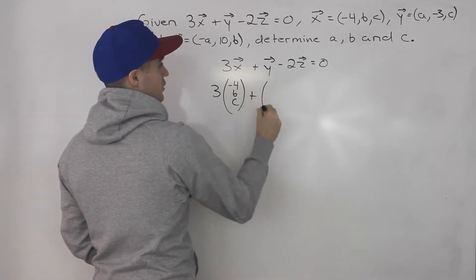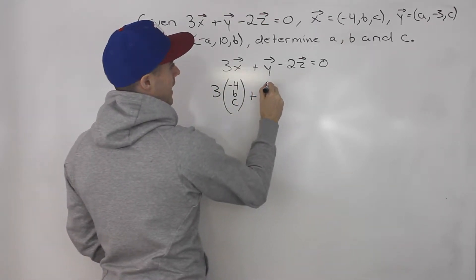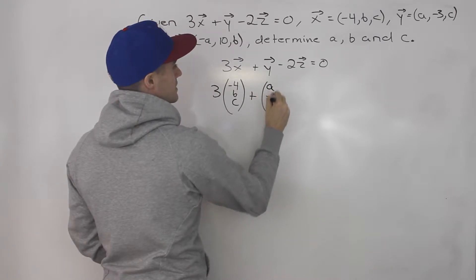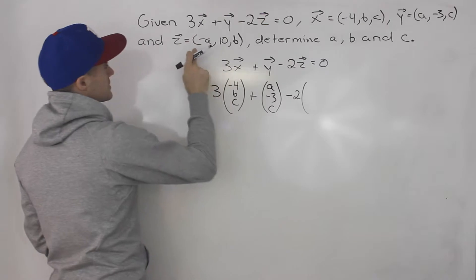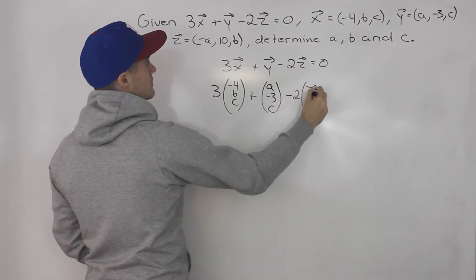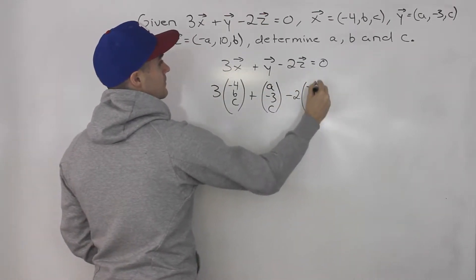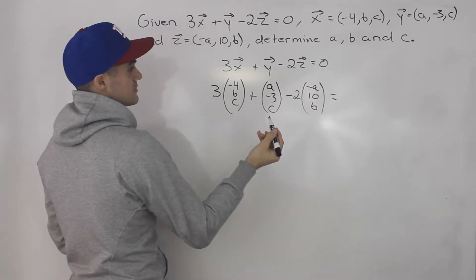Plus vector y, so we got (a, -3, c) for vector y, minus 2 times vector z, which is (-a, 10, b). And that has to equal 0.